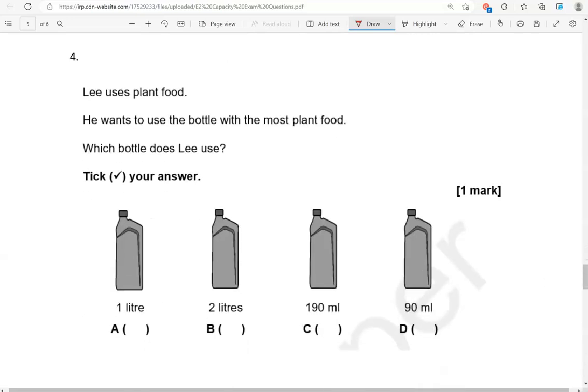Lee uses plant food. He wanted to use the bottle with the most plant food. Which bottle does Lee use? Tick your answer. We've got a with 1 liter, b with 2 liters, c with 190 milliliters, and d with 90 milliliters. B is the one that holds the most, because 2 liters is greater than 1 liter, it's greater than 190 milliliters, and it's greater than 90 milliliters.